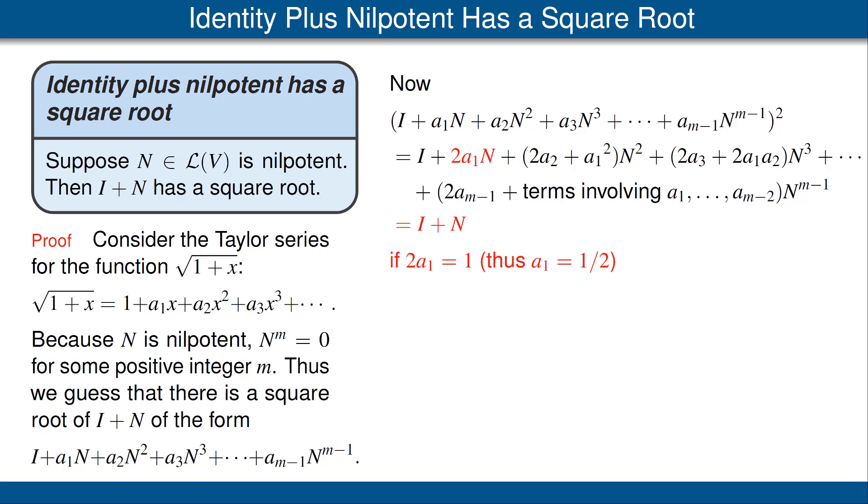Now, we want this to equal the identity plus N. So I've written I plus N, and that's going to hold if certain conditions hold for us. The first condition we see, looking at the coefficient of N in I plus N, which is 1, and the coefficient of N in red above, we see that we need 2a₁ to equal 1. So we choose a₁ to be a half.